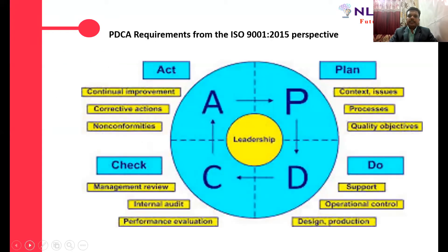From the standard's point of view, you have to plan the context of the organization — the different processes have all got to be planned. You have to do actions on support operations, design, production — all these are the different actions which an organization does. And you do a check by internal audits, performance evaluation, and management review.